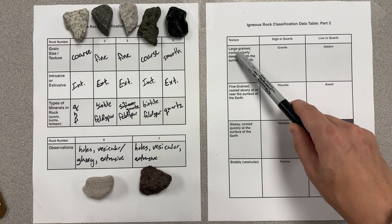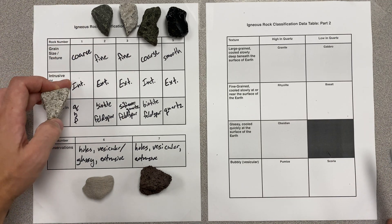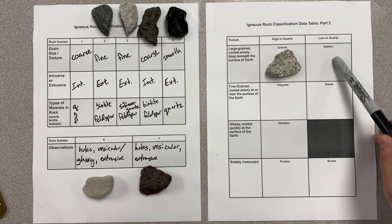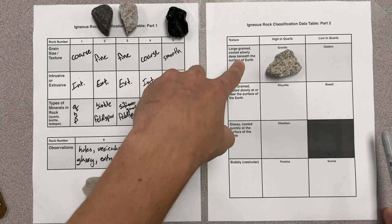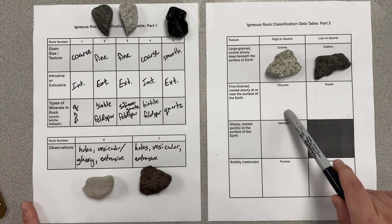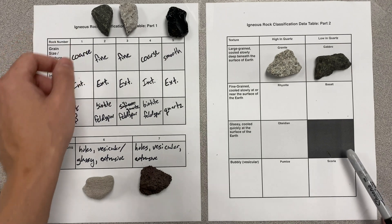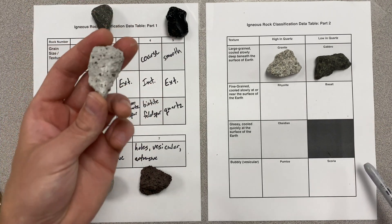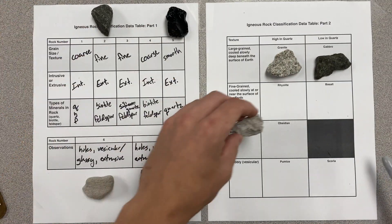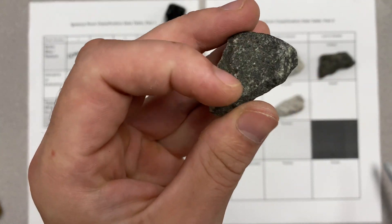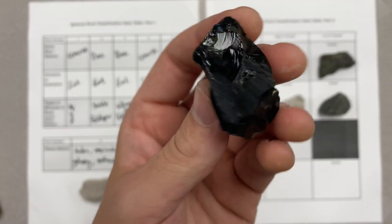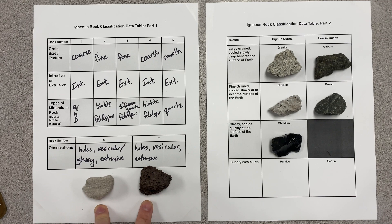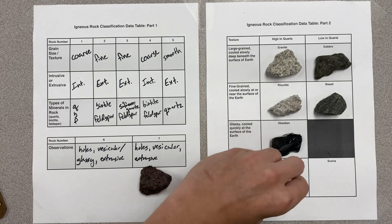Granite is an intrusive rock with large grains that is high in quartz — that would be rock number one. Gabbro is an intrusive large-grained rock that is low in quartz — that was our other intrusive rock which had very little silica compared to granite. Rhyolite is a fine-grained extrusive igneous rock that is high in quartz — it's much lighter in composition. Basalt is also extrusive with finer grains but comparatively much lower in quartz. Obsidian is the glassy and very smooth textured rock. Between the two vesicular rocks, pumice is very high in quartz — that was rock number six — and scoria is also vesicular but very low in quartz.